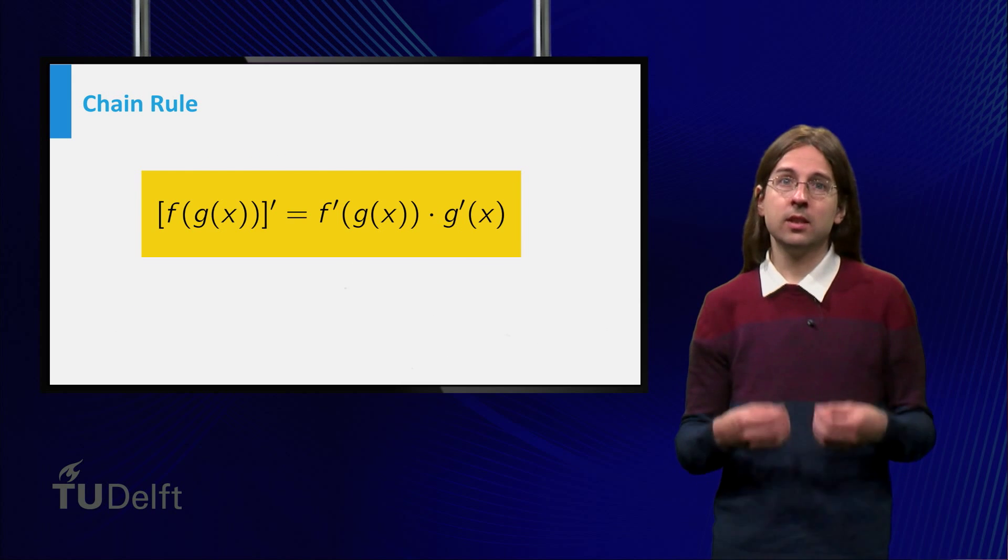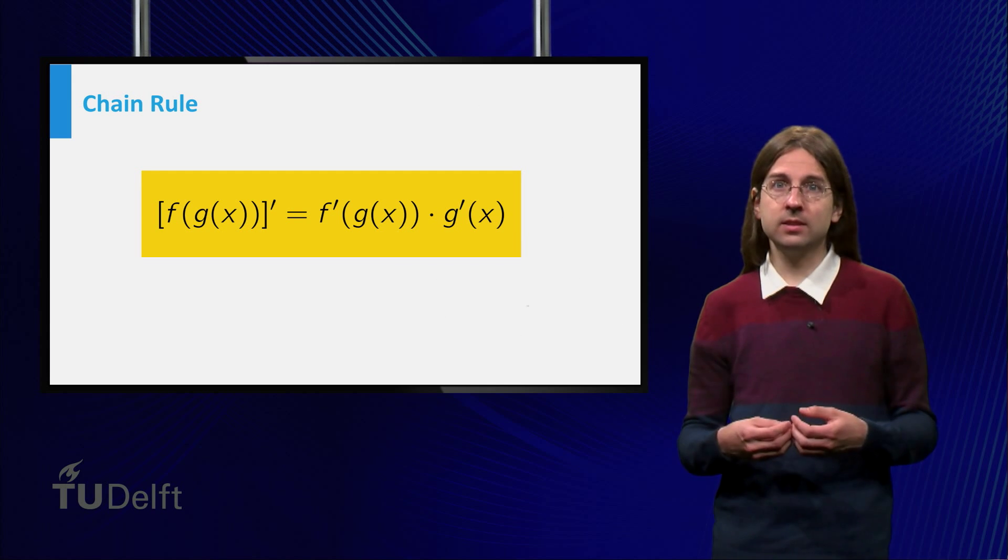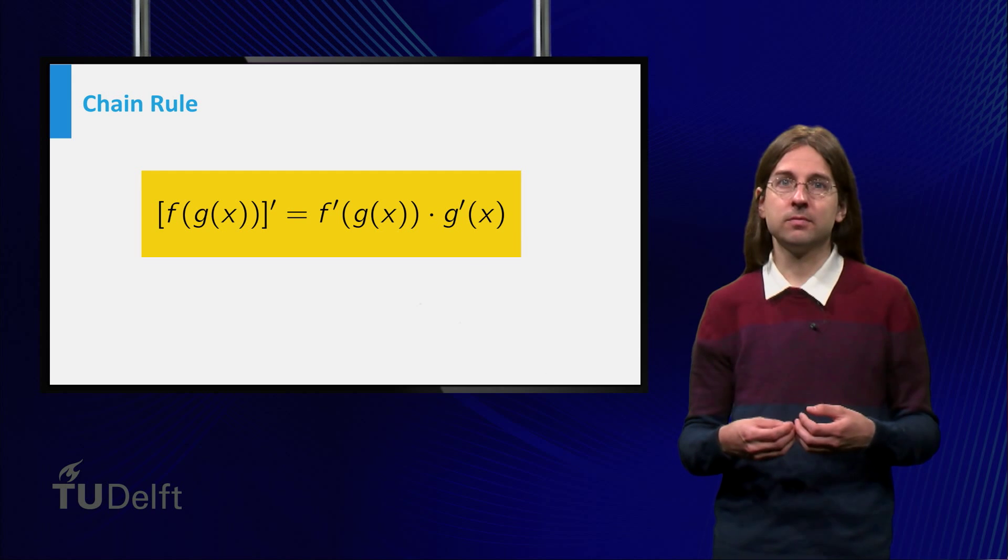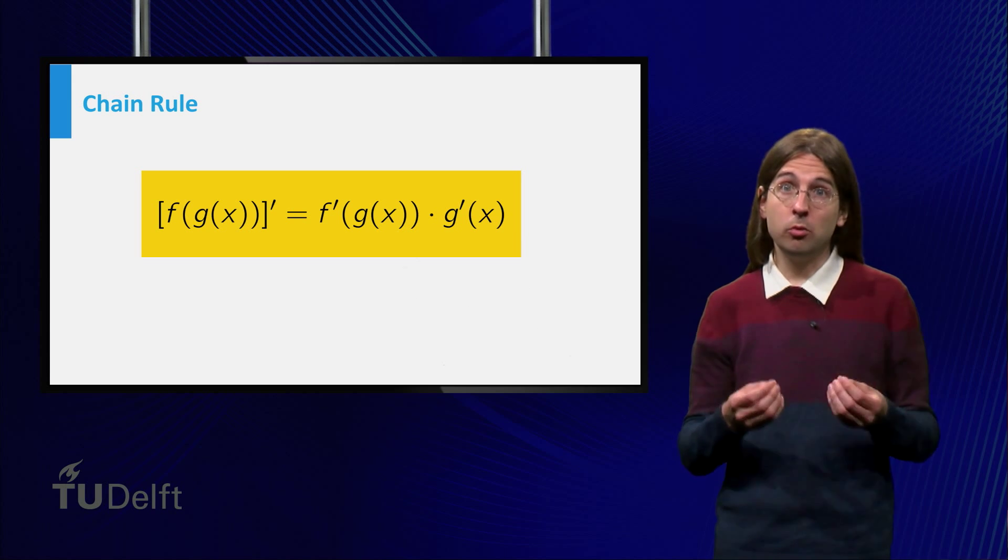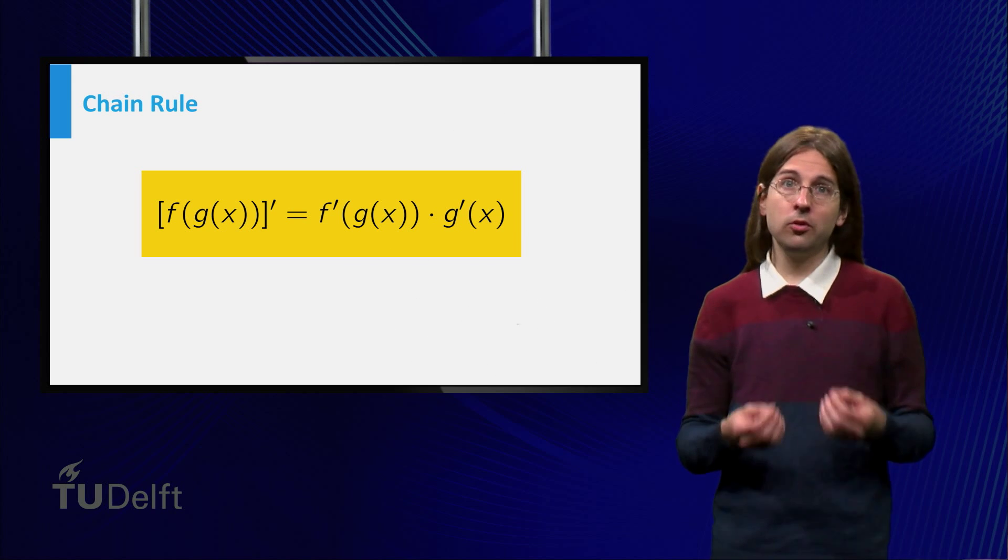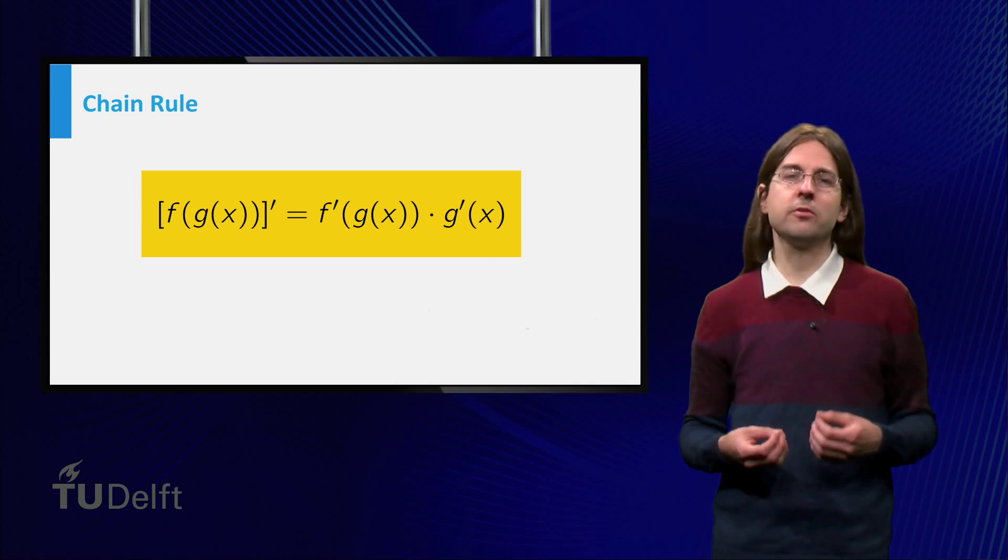In the formula this becomes f prime equals f prime times g prime. Notice that the derivative of pressure as a function of depth is typically almost constant, so the rules on the speed of ascent are typically given just in terms of speed.